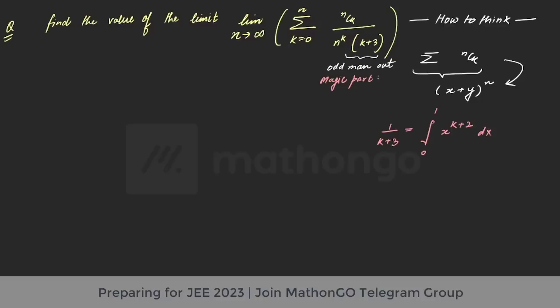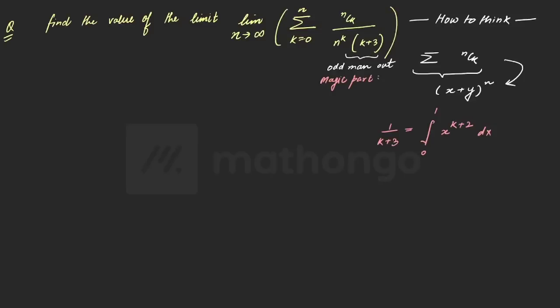If you have solved it by some other method, do let me know. Now why I am doing this? Yeh kyun kara? Because mujhe binomial expansion banana hai. Kya fayda hua is say? Now dekhaiye, yeh yaha par dala k equal to zero to n, nCk. This is already set up. Yeh one ho gaya aur yeh aa gaya zero se one x raised to power k into x square into dx.